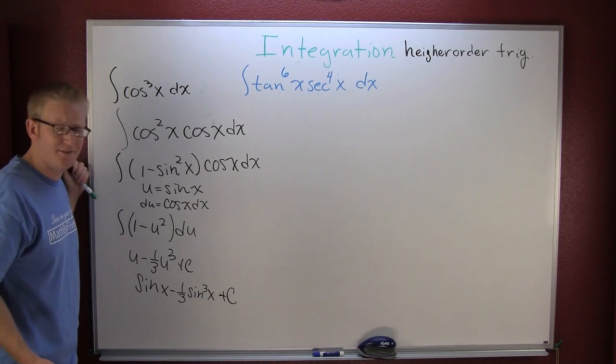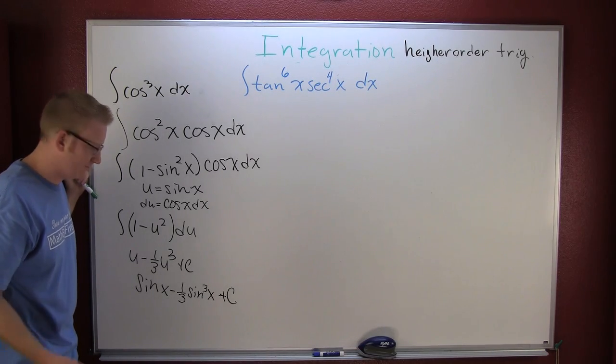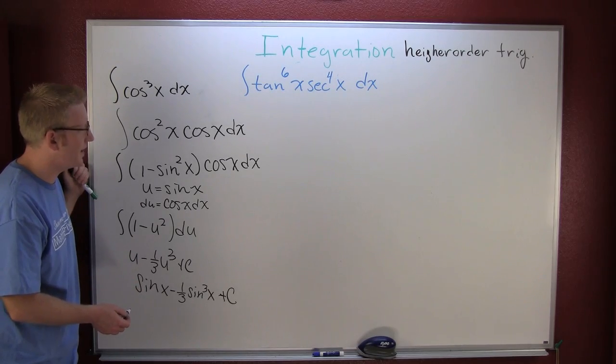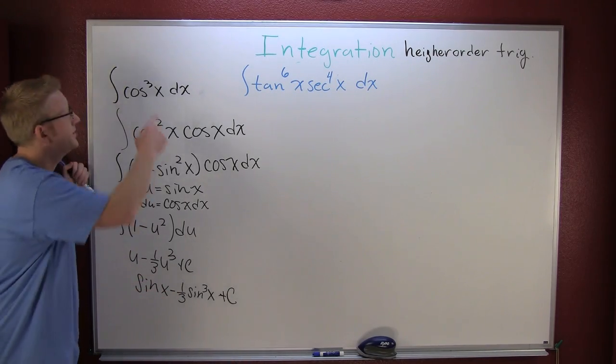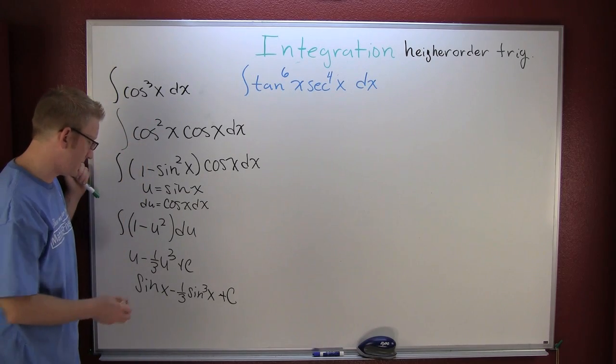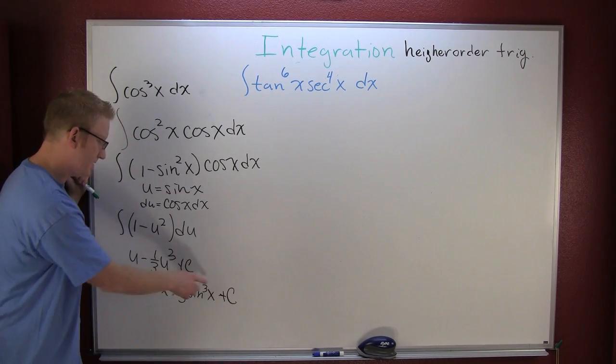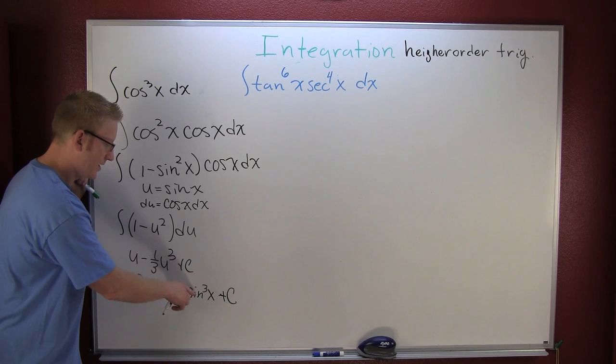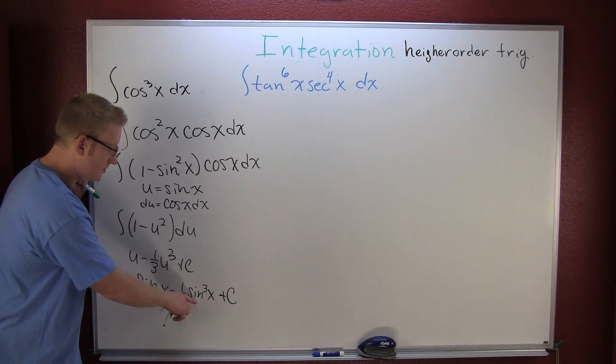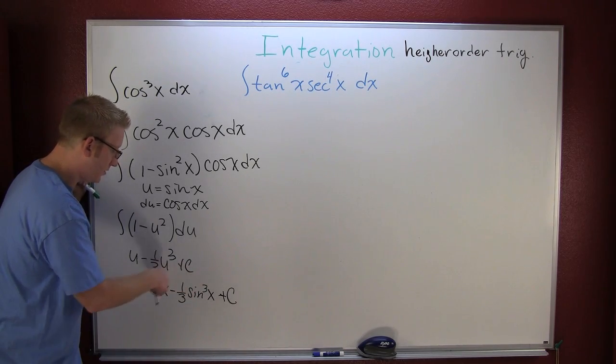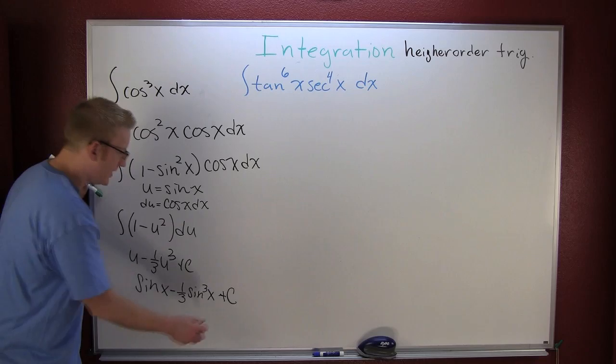But if you don't believe me, check it. Take the derivative of that guy, and after some algebraic manipulations I do believe you're going to come to cosine to the third x. Derivative of sine: cosine minus, drop that three, sine squared times the derivative of the inside, oh cosine. Identity, Pythagorean, and you're done.